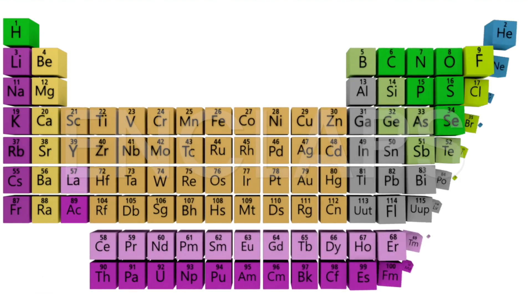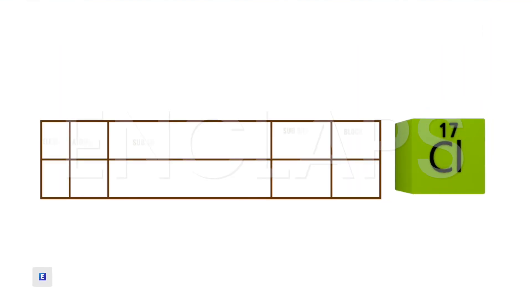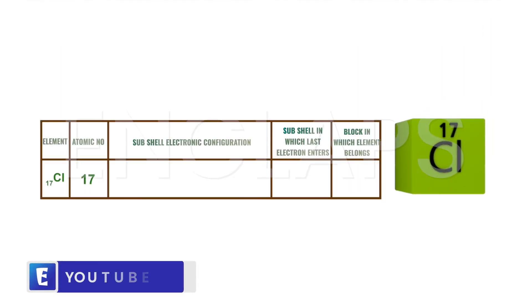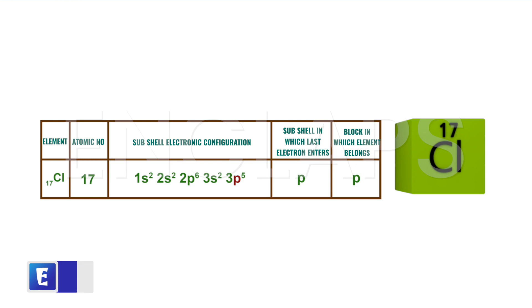Now consider the case of chlorine. Chlorine has its atomic number 17, so its electronic configuration can be written as 1s2, 2s2, 2p6, 3s2, 3p5. Here the last electron enters the P subshell. That means chlorine belongs to P block in the periodic table.